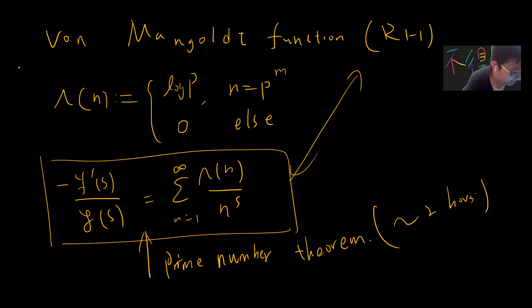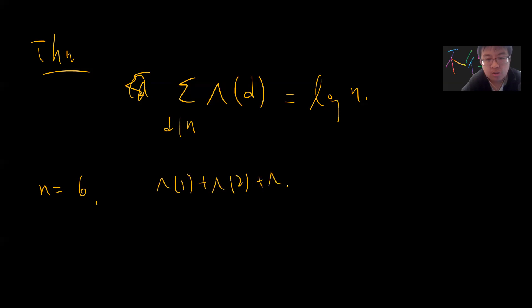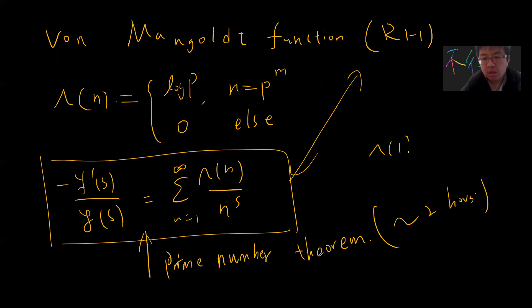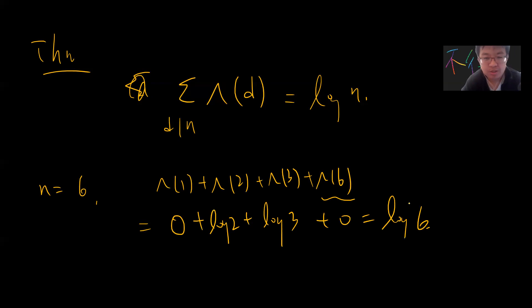I want to prove one important property I'll use later: the sum over divisors d of n of Λ(d) equals log n. Let's try n = 6. The divisors of 6 are 1, 2, 3, 6. By definition Λ(1) = 0, then we get log 2 + log 3, which equals log 6. Let's give a proof.